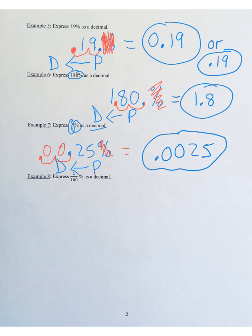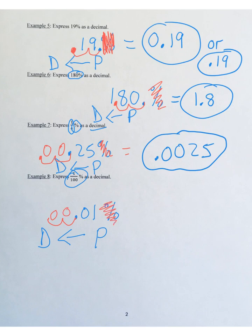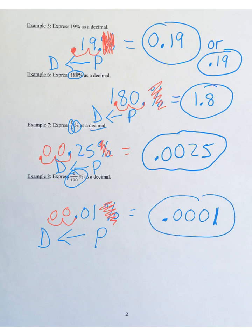Example eight: express 1/100% as a decimal. First divide 1 by 100 to get 0.01. Bring down the percent symbol. Now move the decimal point two hops to the left — we need to insert two zeros. Remove the percent symbol. Result is 0.0001. Final answer: 0.0001.